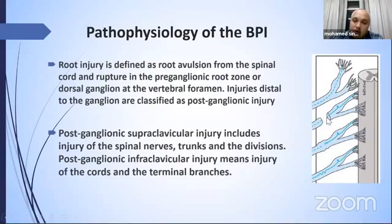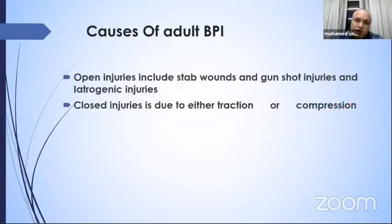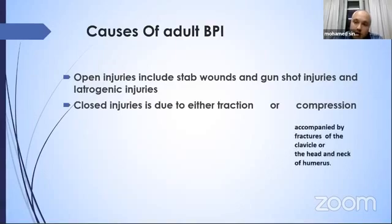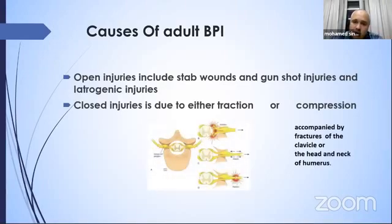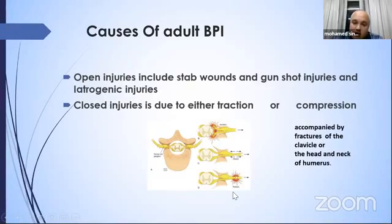Postganglionic infraclavicular lesions include lesions in the cords and terminal branches. The causes of adult brachial plexus injury include open injuries such as stab wounds, gunshot injuries, and iatrogenic injuries — iatrogenic injuries usually occur during interscalene block. Closed injuries are due to either traction or compression. Compression usually accompanies fracture of the clavicle or fracture of the head and neck of the humerus. Traction injuries can result in avulsion of the roots from the spinal cord, stretch injuries, or rupture of the nerve.